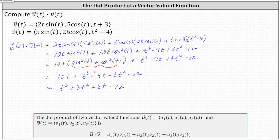This is the dot product of the two vector-valued functions, u of t and v of t. I hope you found this helpful.